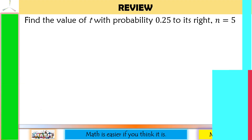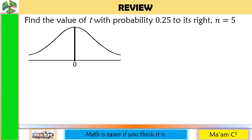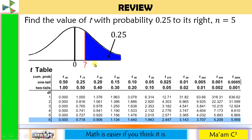Let's have a quick review of our previous lesson. Find the value of T with probability 0.25 to its right with n equals 5. First, let us sketch our T curve and estimate the location of T. It says the probability to its right is 0.25, so T is somewhere here, and this area to the right of T is 0.25. Let's have our T table. The picture tells us one tail whose area is 0.25, so one tail, 0.25 — it's here.